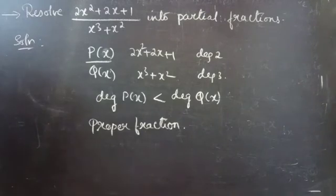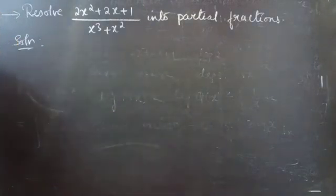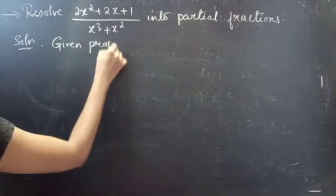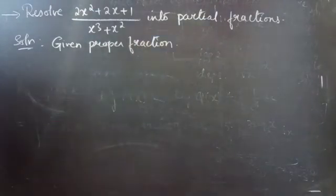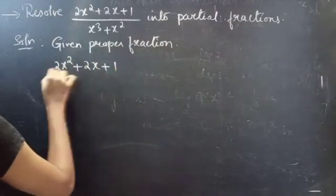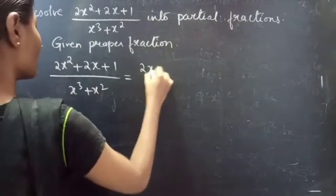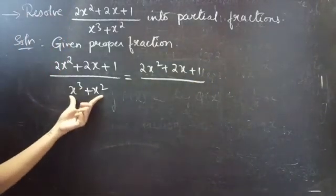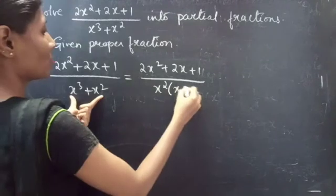We are given a proper fraction: 2x squared plus 2x plus 1 by x cubed plus x squared. You can write the denominator as — taking x squared common from the two terms — x squared into x plus 1. Since x squared times x is x cubed and x squared times 1 is x squared.